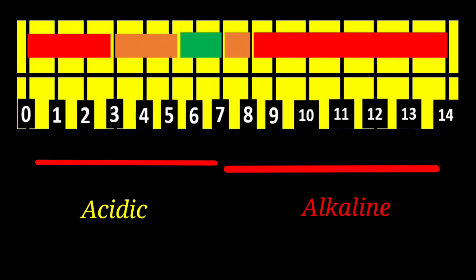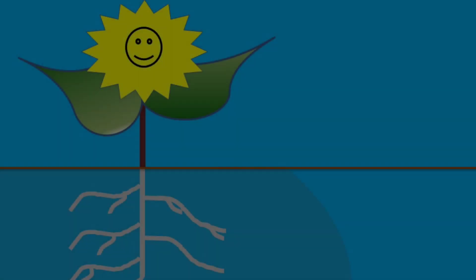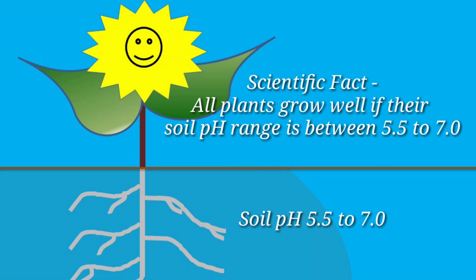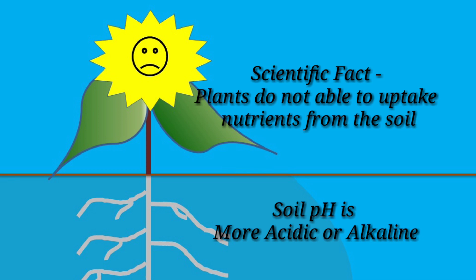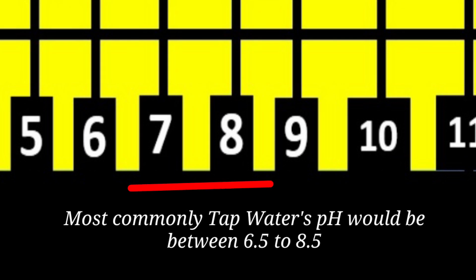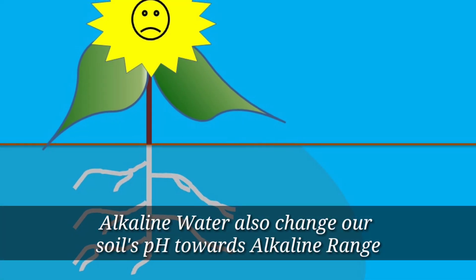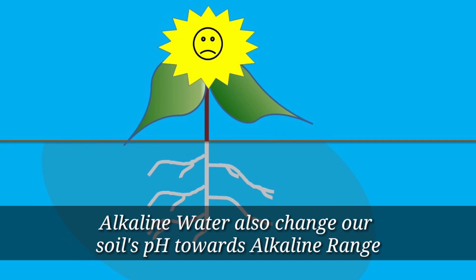If the pH is below 7 it is considered acidic, if above 7 it is alkaline, and 7 is neutral. All plants grow well if their soil pH is between 5.5 to 7, and flowering and fruiting plants require a pH range between 5.5 to 6.5. If the pH goes beyond this limit, plants cannot uptake nutrients from the soil and start drying. Tap water's pH is typically maintained between 6.5 to 8.5, and when we continuously use it, it slowly shifts soil pH towards alkaline, causing plants trouble in nutrient uptake — this is why they don't reach their full potential.